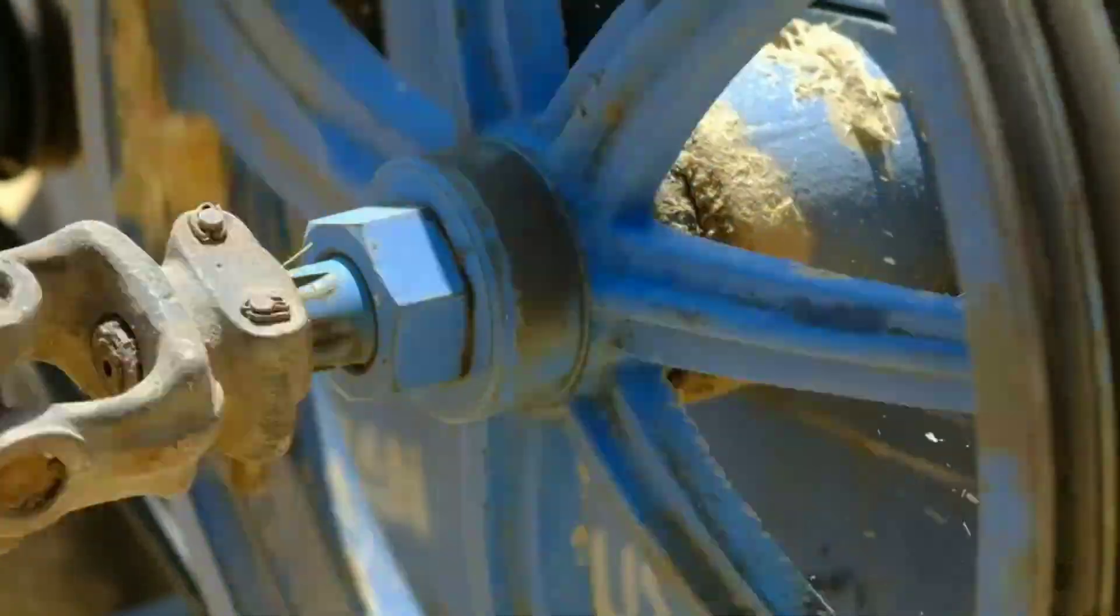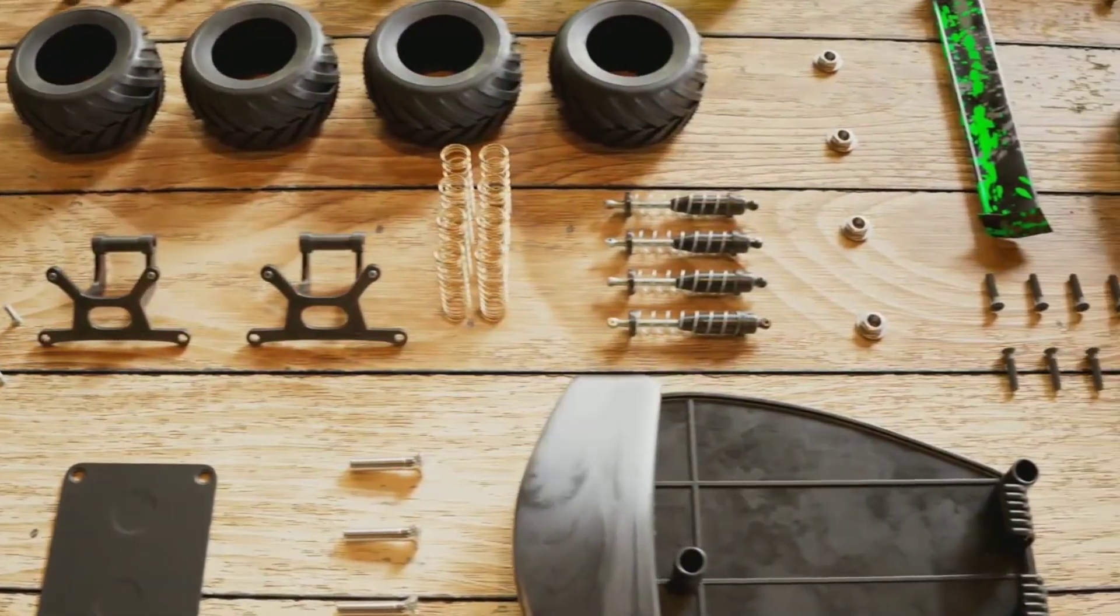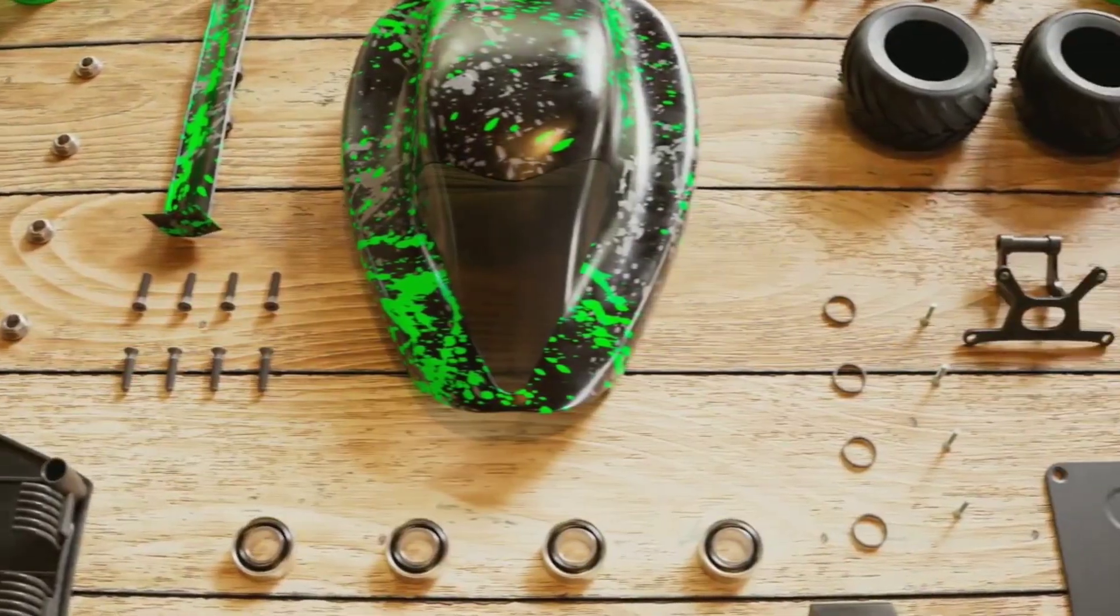The DC motor is a marvel of simple science and clever engineering. Electricity and magnetism work together to create motion, thanks to a few key parts: stator, armature, commutator, and brushes.